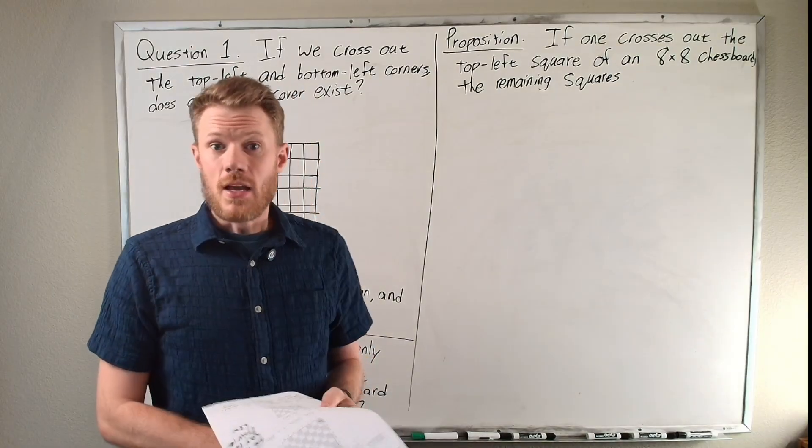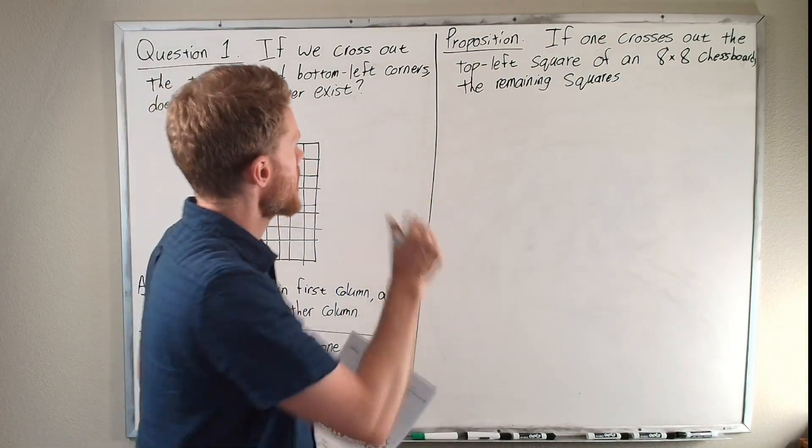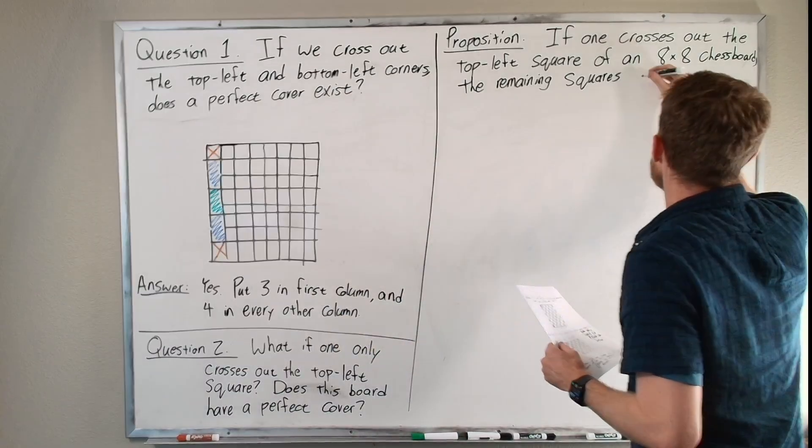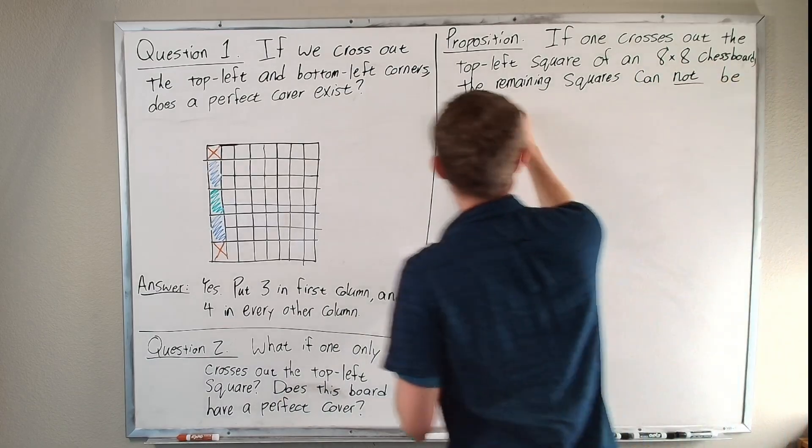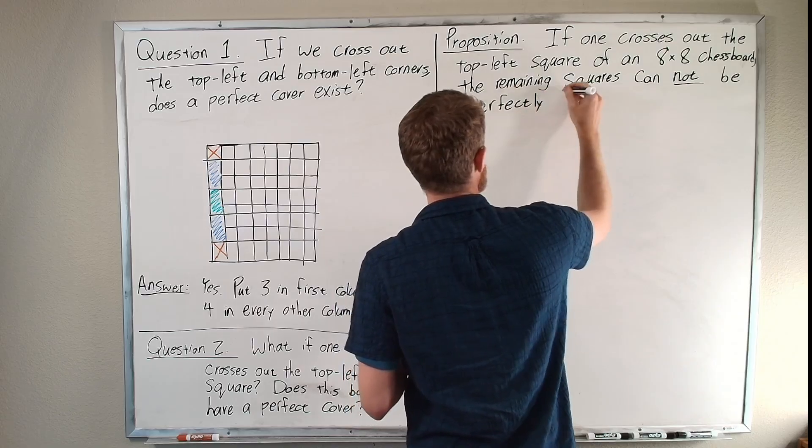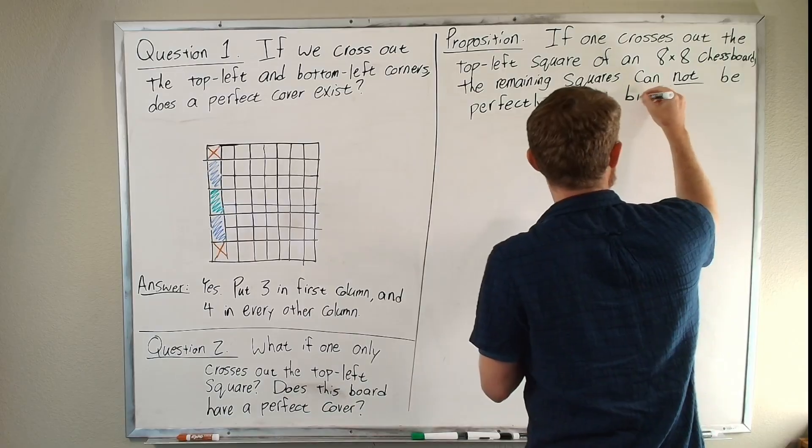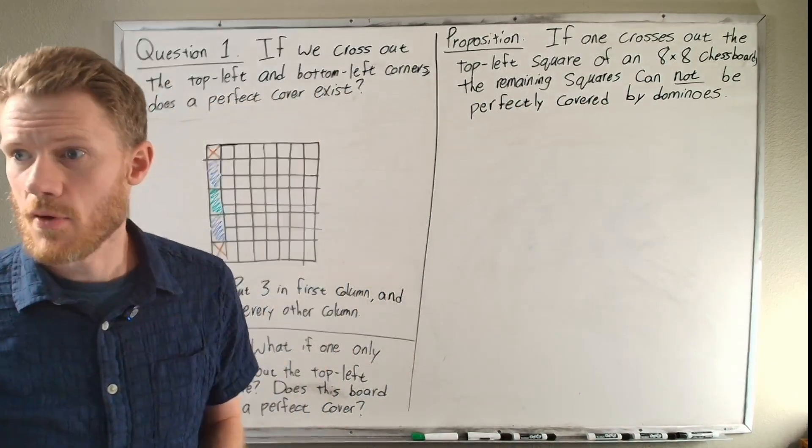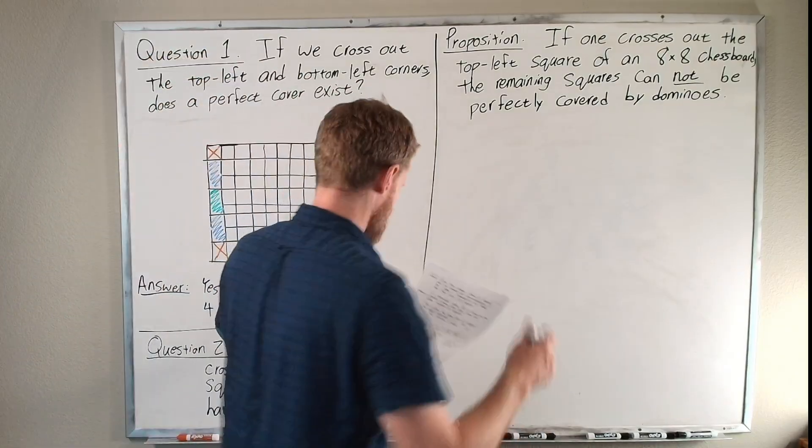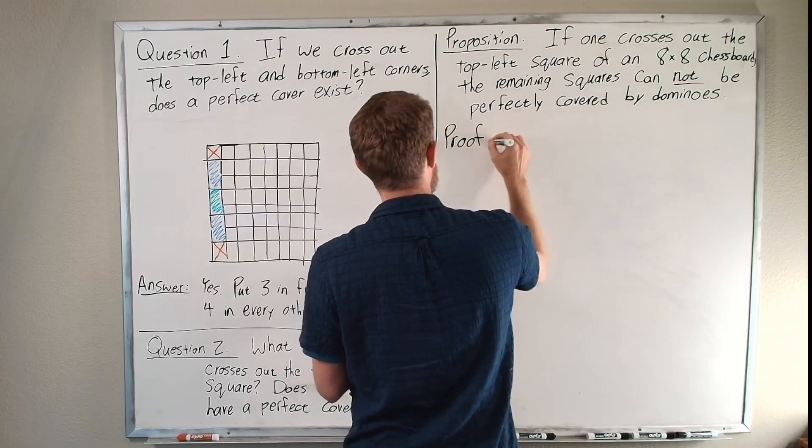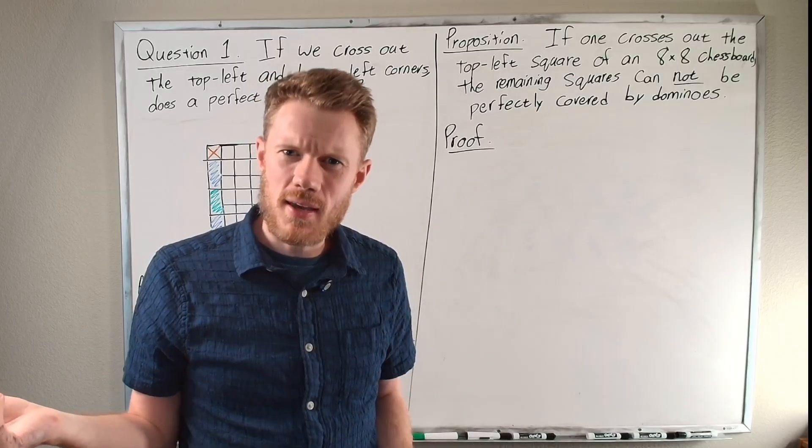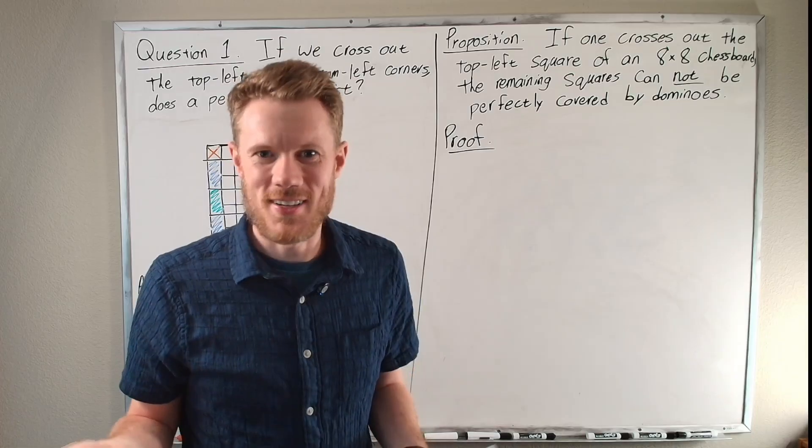So why would that be? Think about that. So here's the answer. I'll write this one out as a proposition. If one crosses out the top left square of an 8x8 chessboard, the remaining squares can not be perfectly covered by dominoes. Let's write out a little proof of why this would be the case. And the thinking of it, you should be thinking about the fact that there's always one left over. Well, why would that be the case? It's the case because the numbers don't work out. Well, what does that mean?